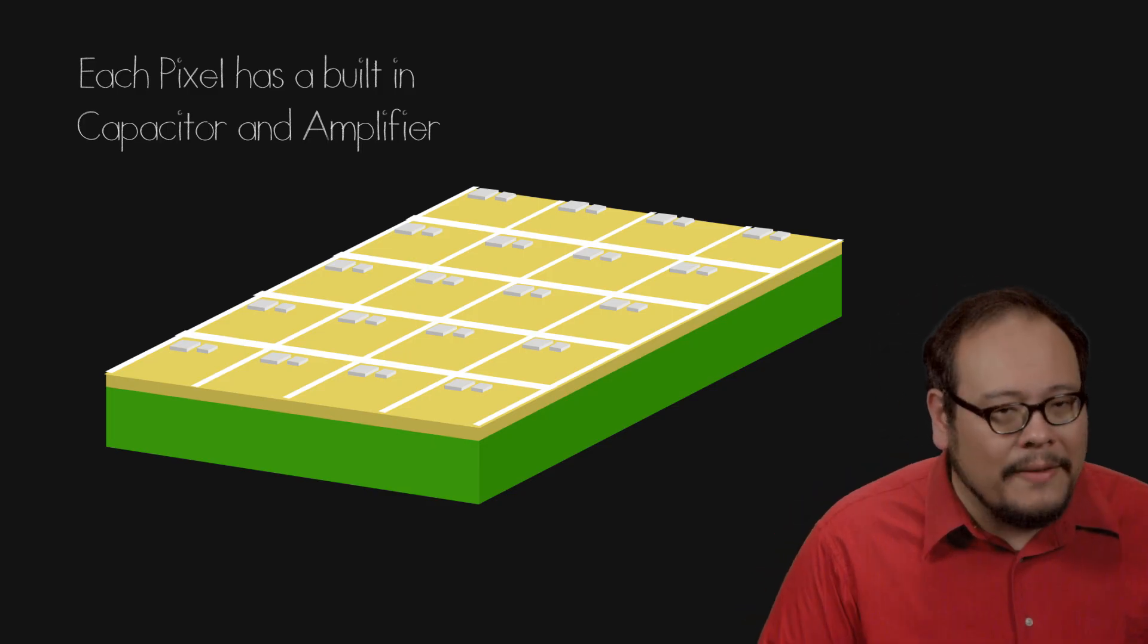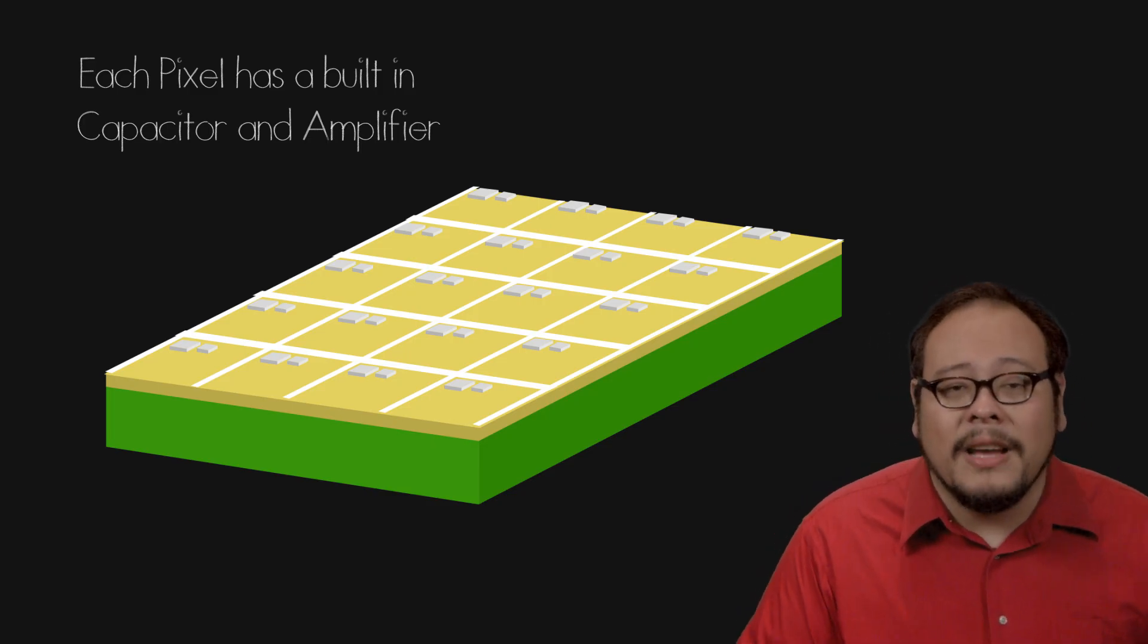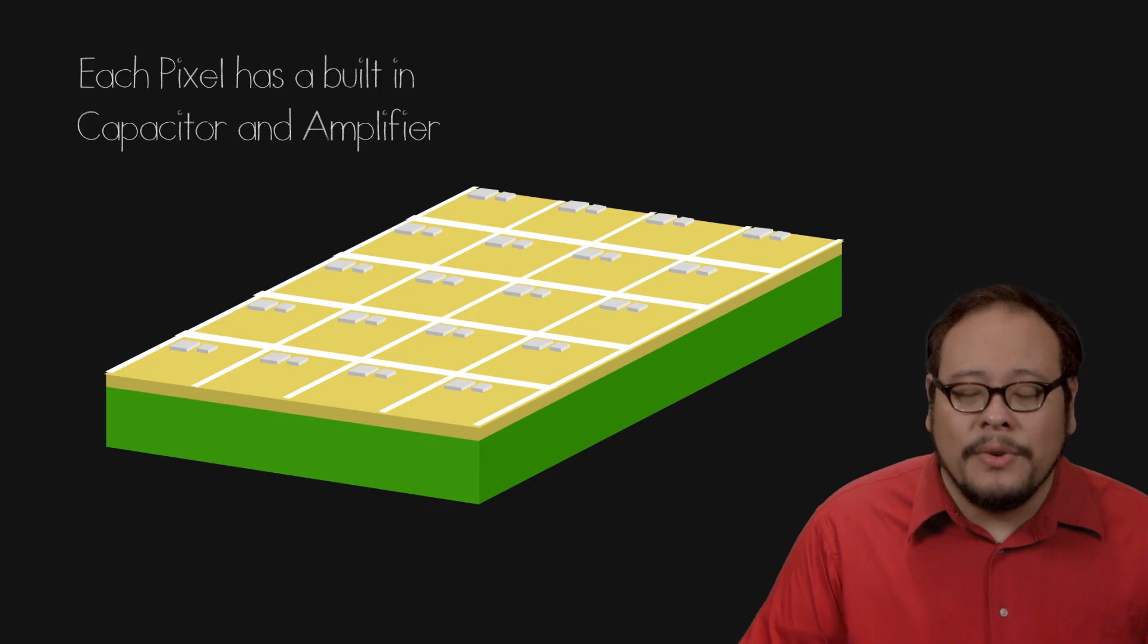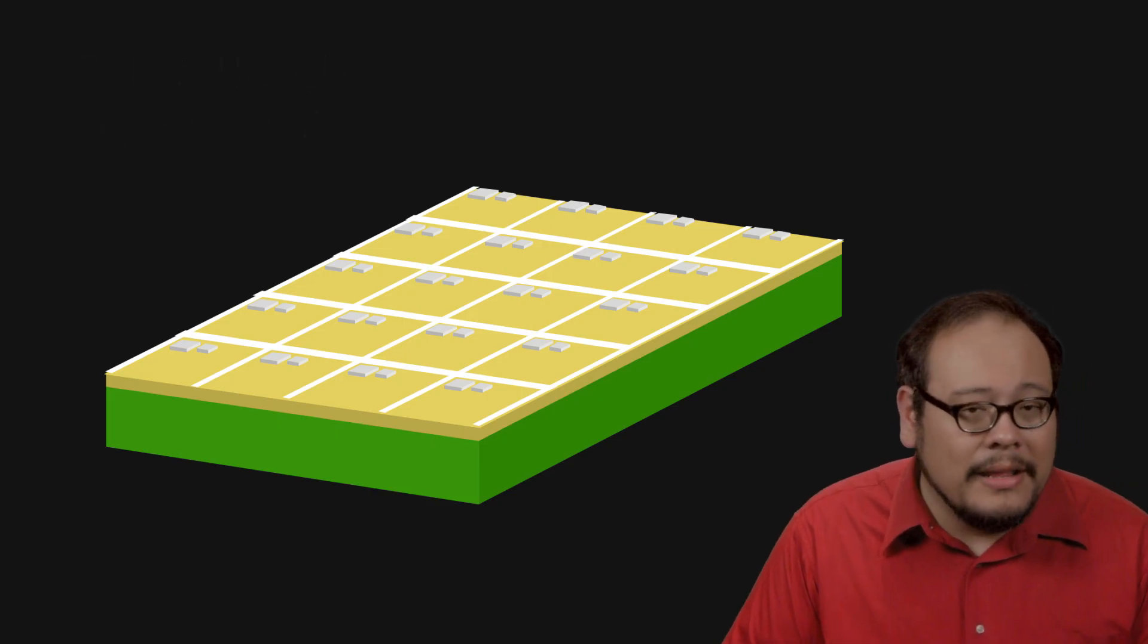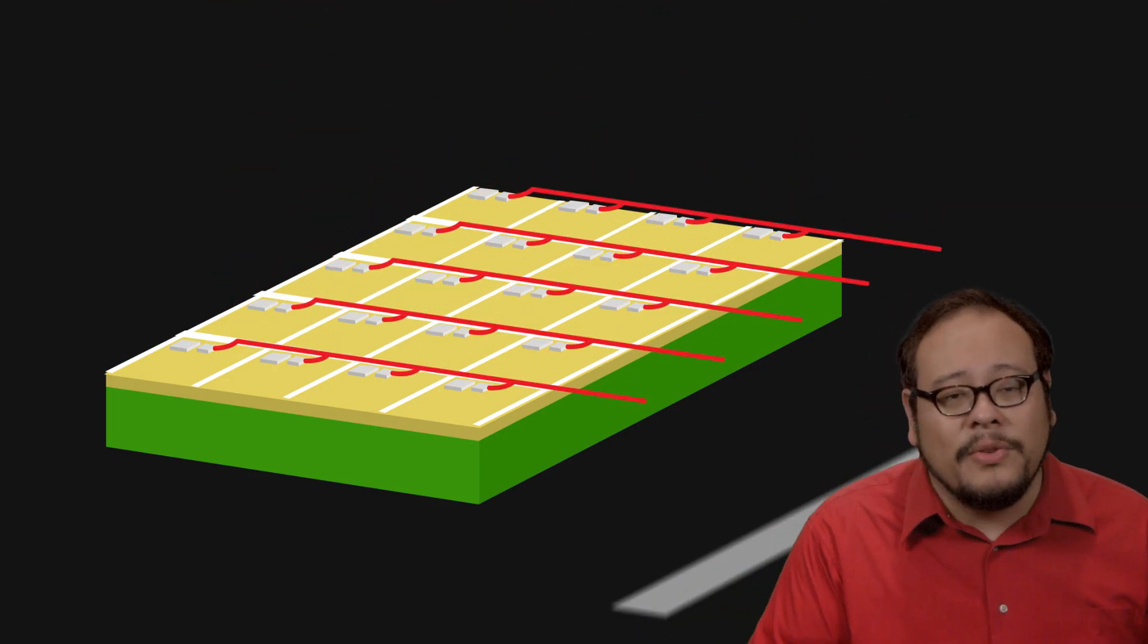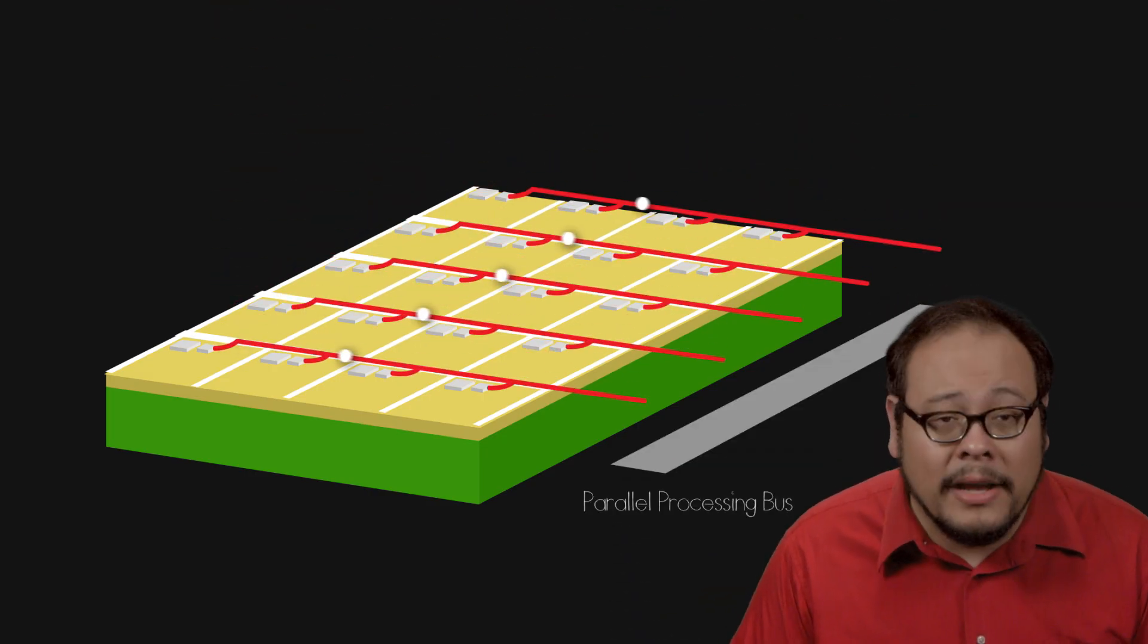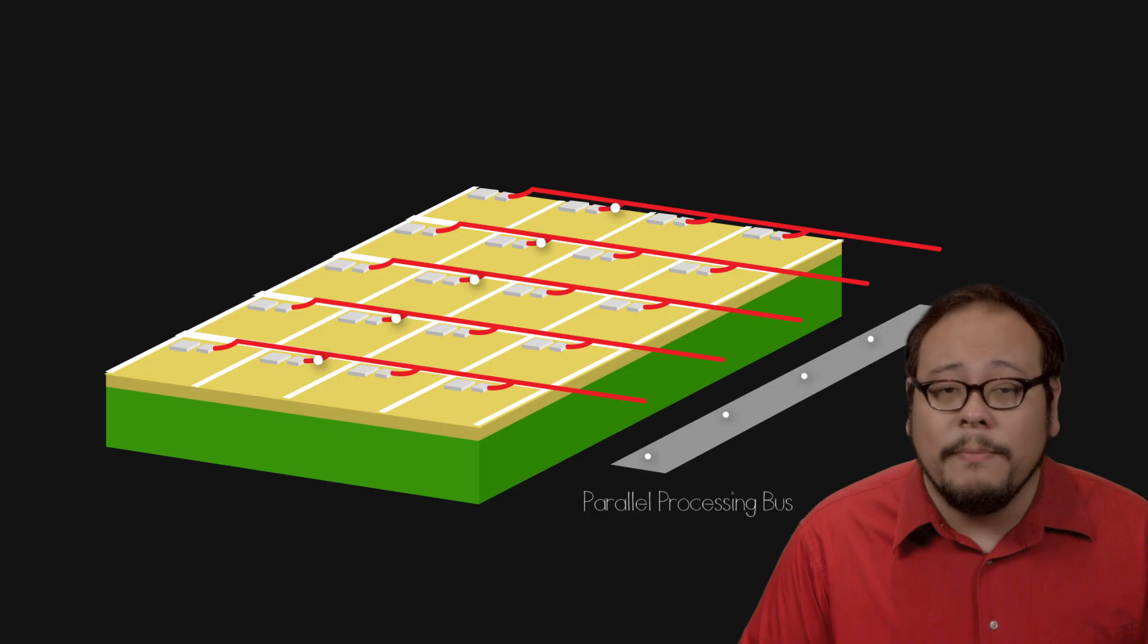Amplifying at the pixel level overcomes the capacitive coupling issue and is what makes the sensor an active pixel sensor as opposed to a passive one. This amplified voltage is then sent down tiny wires onto a bus and processed in parallel to be stored on the camera's computer.